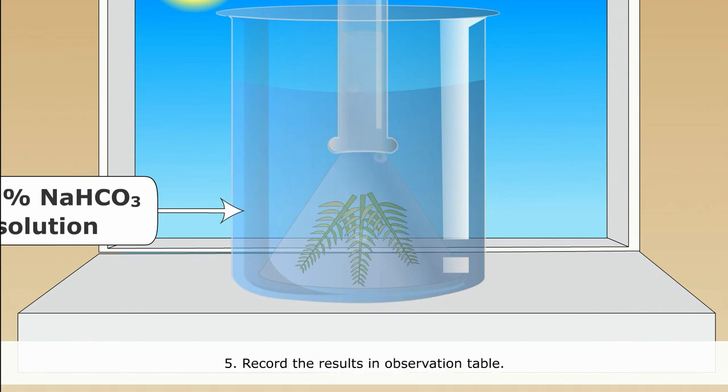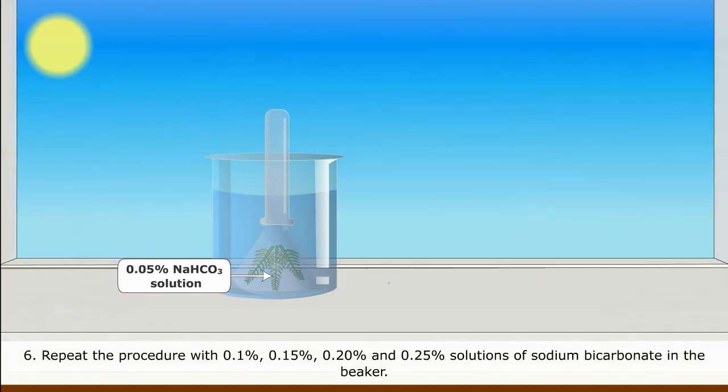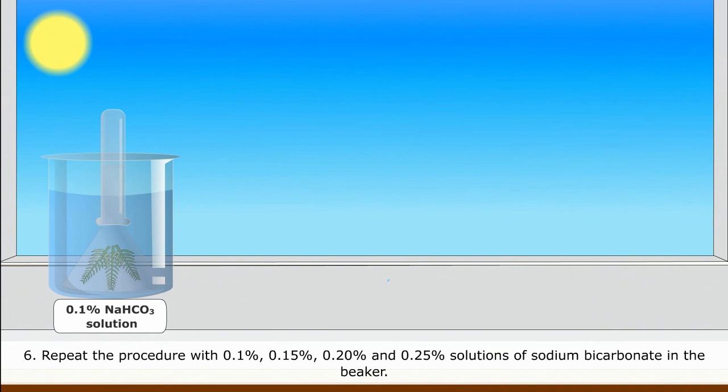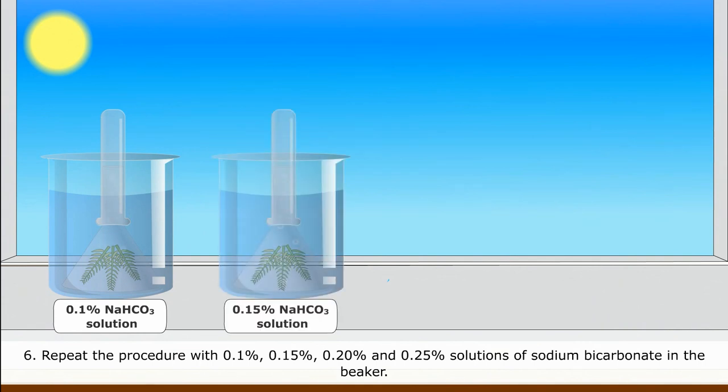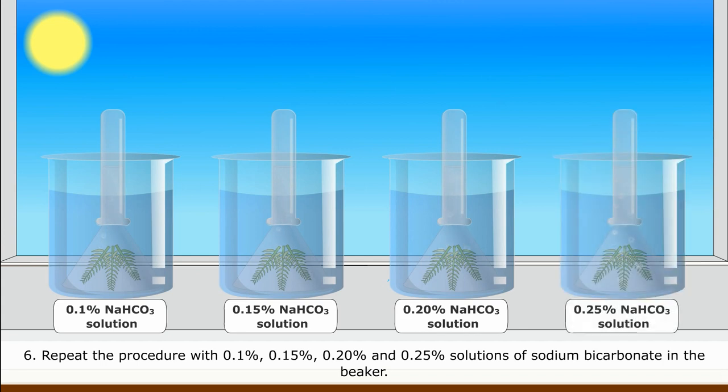Record the results in observation table. Repeat the procedure with 0.1%, 0.15%, 0.20%, and 0.25% solutions of sodium bicarbonate in the beaker.